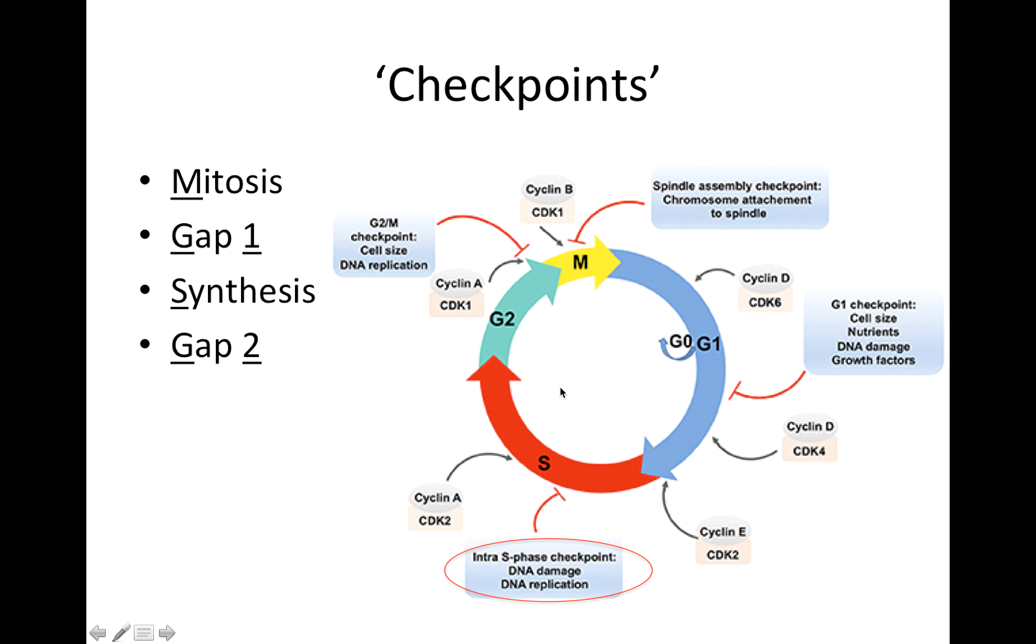So this brings us to the concept of checkpoints. So let's see what we're looking at here. So this is the cell cycle. So this is mitosis. This is when actually the division occurs. Then we have a waiting phase. And then we have the synthesis phase where we're synthesizing new DNA, replicating our DNA. And then a second waiting phase, which we call gap. We call this gap one, gap two. And then mitosis.